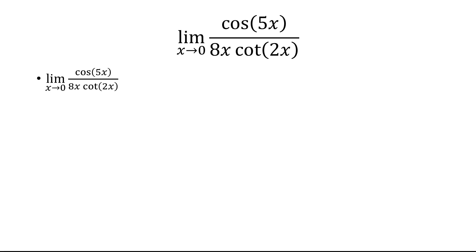So right now, we have a limit of quotients. So we can use one of the limit laws to make this into quotient of limits. So we have the limit at the top over the limit at the bottom.